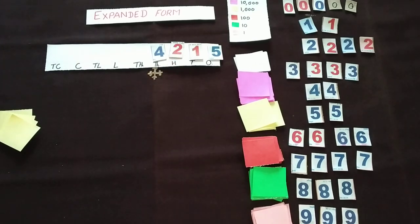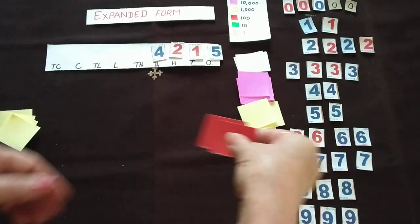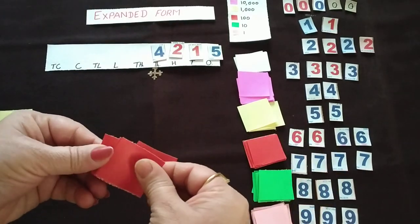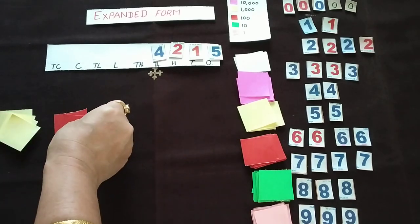The next one is 200. 100 means which color here? Red color. So how many sheets? 2 sheets. So the child will collect 2 sheets. Just keep it beside that.